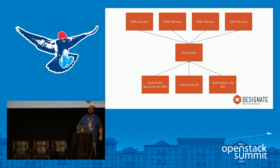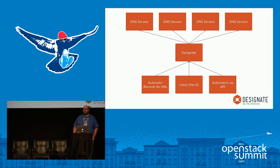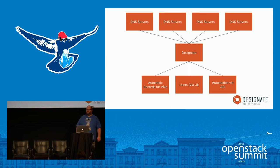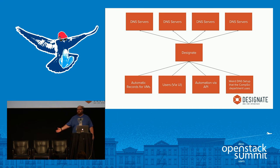What Designate provides is different ways for these different users to push records into a single place. We have automatic records via Neutron integration — when you create floating IPs we can automatically assign DNS records and reverse DNS. Users can interact through Horizon plugins. Our API is relatively simple so people can create custom control panels. We also support the computer science department setup where they want to run their own way — we support bringing in that information too.